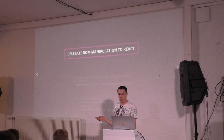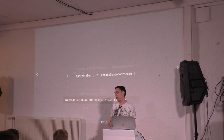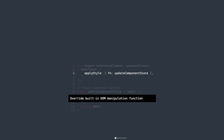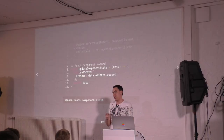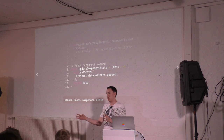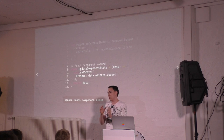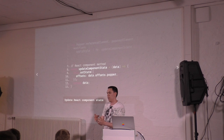Delegating DOM manipulation to React takes advantage of modifiers. We override the applyStyle modifier — the built-in modifier that handles DOM manipulation. Popper.js doesn't manipulate the DOM anywhere else except in applyStyle. If we override this modifier, we take the computed offset of the popover and pass it to the component state, then React uses this new state to apply the offset to your DOM node. We return the data at the end so the next modifier receives the updated data.